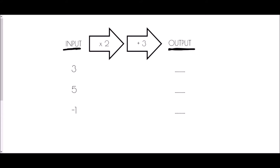I'm going to take this one step at a time. If I have three, as the arrow says I multiply by two — three times two is six. The next step is to add three, so six plus three is nine. My output for this function machine is nine.